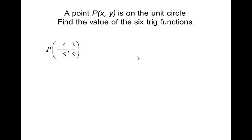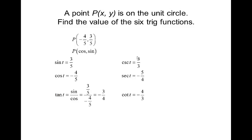Point P is a point on the unit circle. It's some angle T whose terminal side intersects the unit circle at negative four-fifths, three-fifths — that's in quadrant two. We want to find the value of the six trigonometric functions. Wherever that point intersects the unit circle, that coordinate is in the form cosine, sine. So point P has a cosine of negative four-fifths and a sine of three-fifths. Then we get our reciprocals: tangent is sine divided by cosine, which turns out to be negative three-fourths, and cotangent is negative four-thirds.